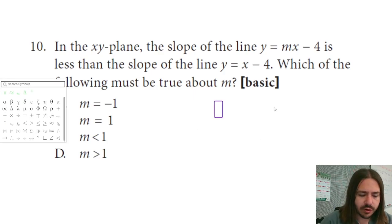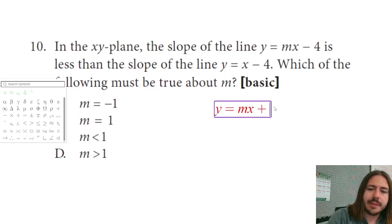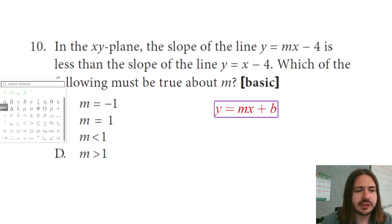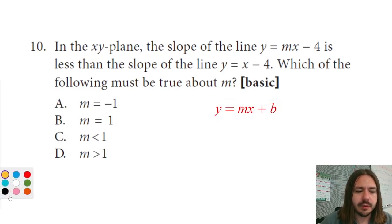Okay, so if you have an equation that's in this format, this mx plus b format, the slope is going to be the number that is the coefficient of x. It's going to be the m. This is the slope.